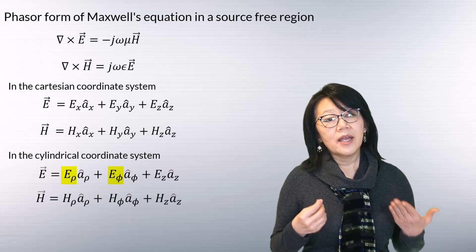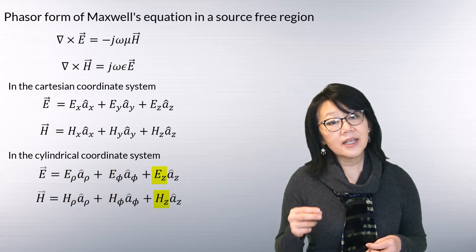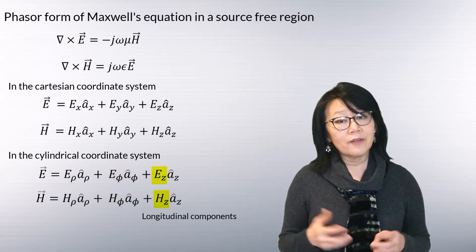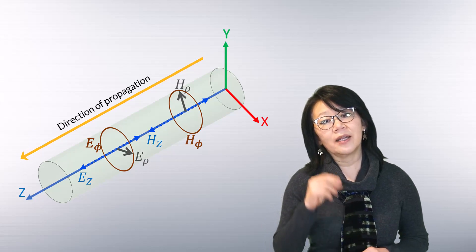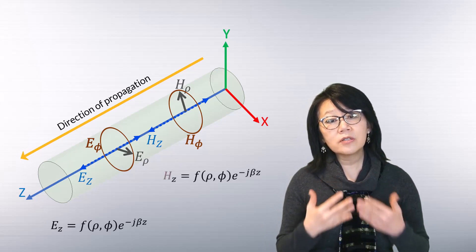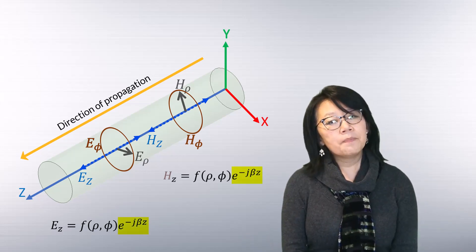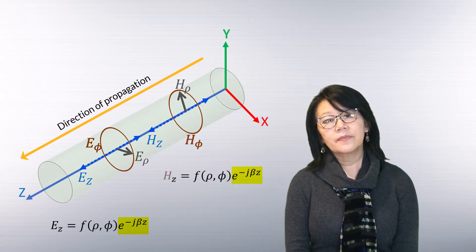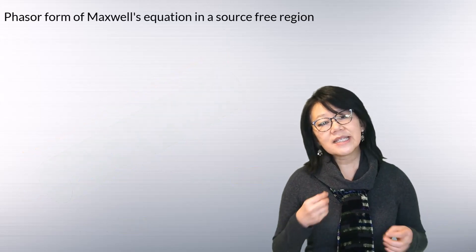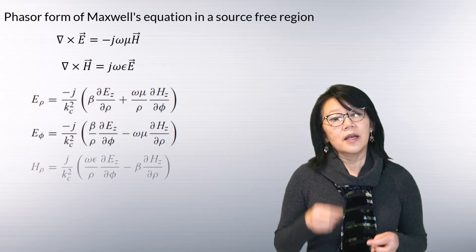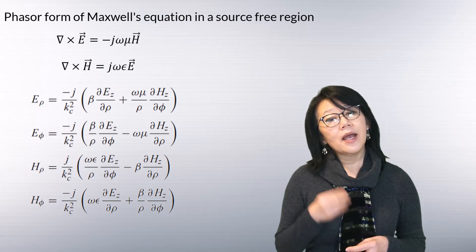This representation results in simplification of the resulting equations. We have E_rho, E_phi, H_rho, and H_phi as the transverse components, while E_z and H_z are the longitudinal components in the direction of wave propagation. The fields propagate along the Z axis, and the variation along Z is expressed in terms of the exponential of j times beta times Z, where beta is the propagation constant for the lossless dielectric medium.